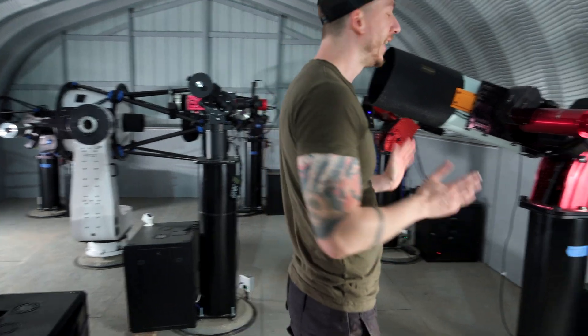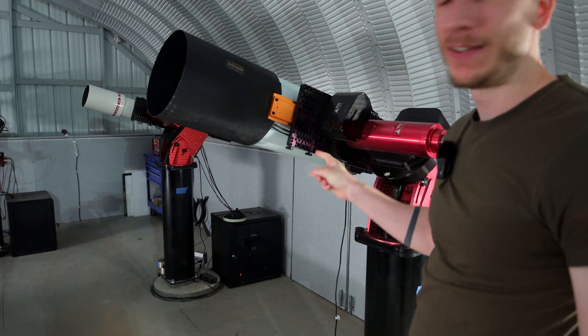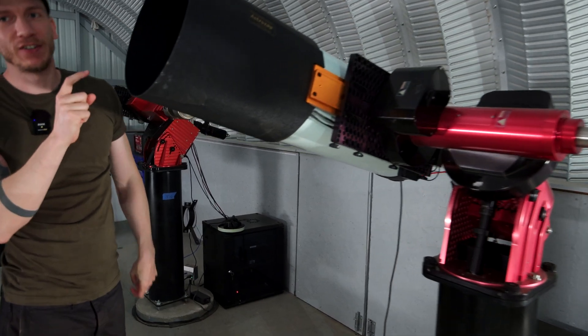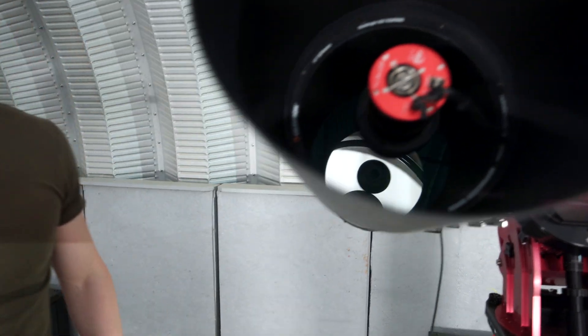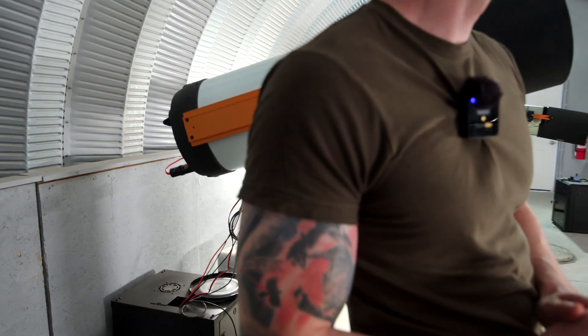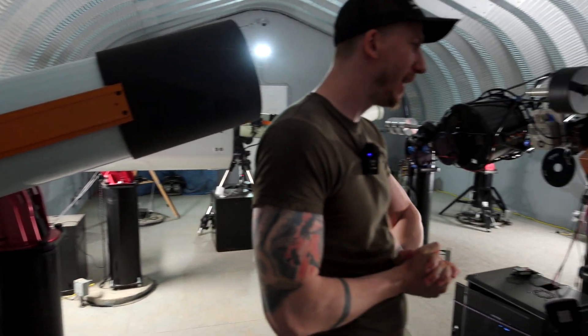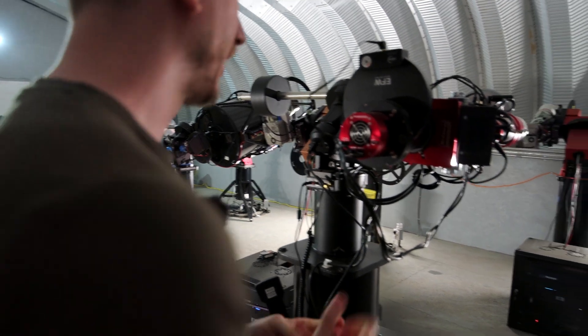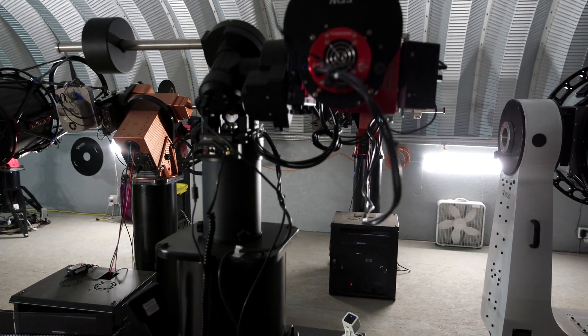And here we have yet another Software Bisque mount and this time with a Rasa 11 attached to it and an ASI 071MC. Look at that, so an F2 Rasa 11. Now right behind you there is another FSQ106 I believe with an Ioptron CM70G mount, which those are very good mounts as well. And the camera here seems to be the ASI 6200, so the full-frame camera.